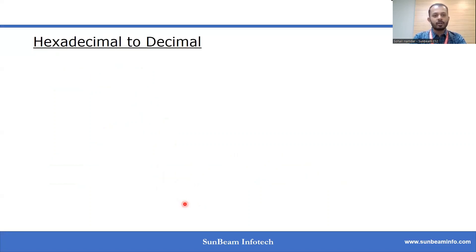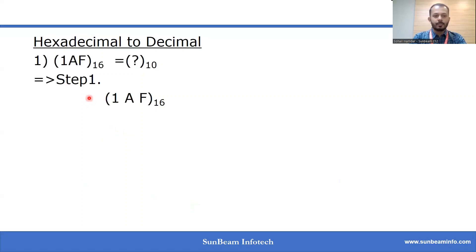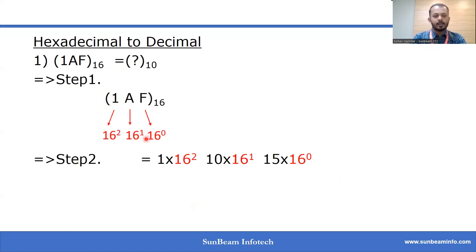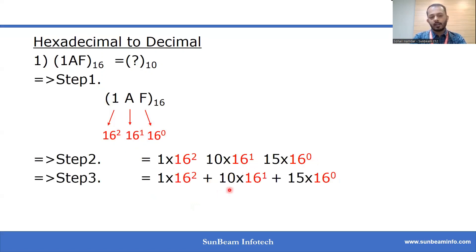For conversion of hexadecimal to decimal, we again follow the same three steps. In step 1, we find the positional values of 1AF. In step 2, we multiply each positional value by the corresponding digit. In step 3, after adding these products, we get the final output 431. By following these three steps we can convert hexadecimal, octal, and binary number systems into decimal number system.